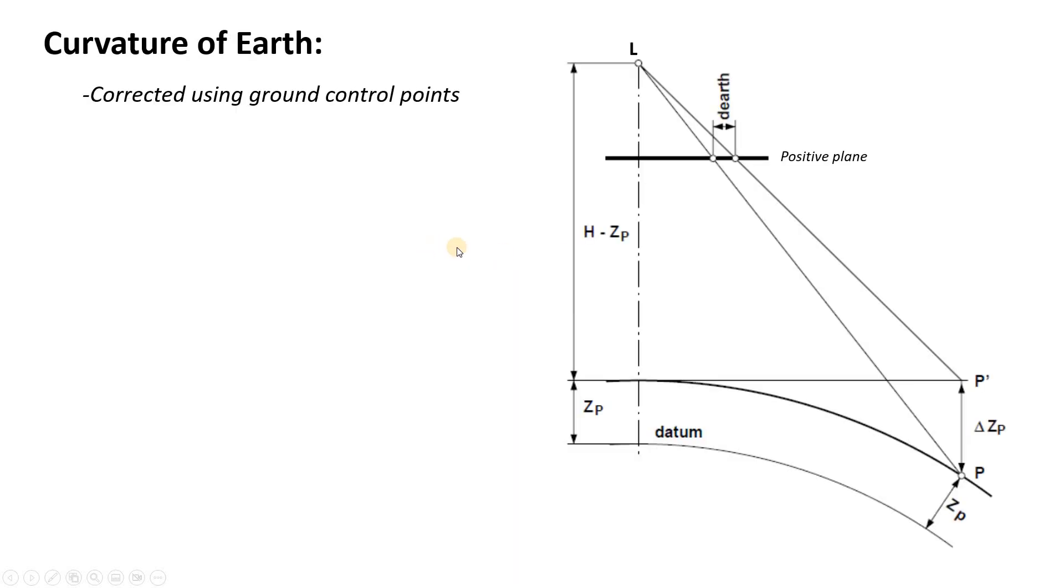Another factor is curvature of the earth. Particularly for satellite imaging, if you are looking from very far away, the earth itself actually starts to curve. So a point that you're seeing here, p on the surface of the earth, would intersect that positive plane here. But if you wanted to restore it to an orthographic projection, you'd actually have to make this correction de-earth and move it out here. And this is done using ground control points for satellite imagery.